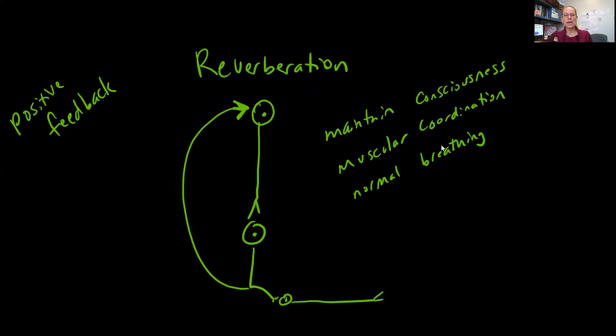Reverberation is an example of a positive feedback mechanism that can maintain consciousness or the muscular coordination of normal breathing. You have one neuron synapsing to a second neuron, which not only synapses onto a third neuron but also goes back and synapses onto the first one, keeping that stimulus going.